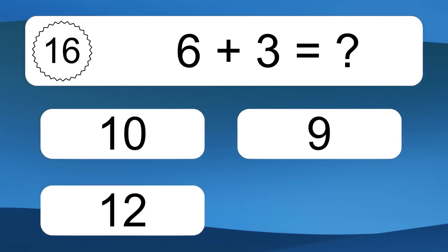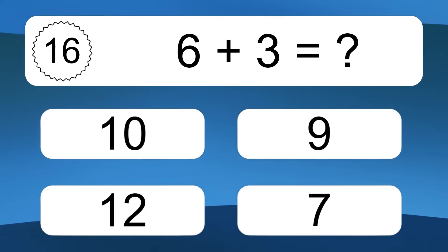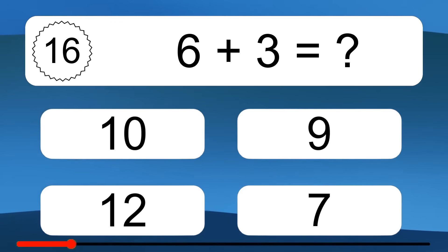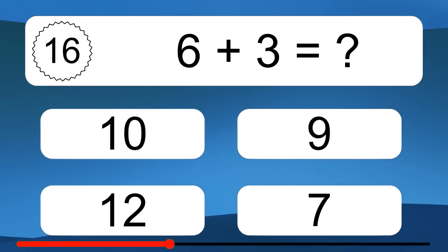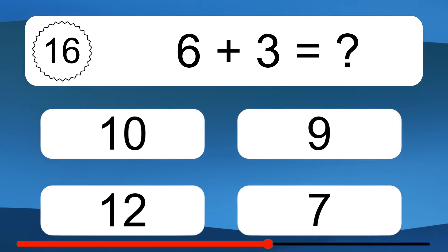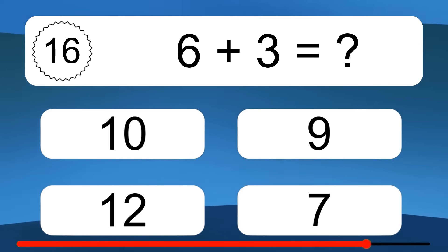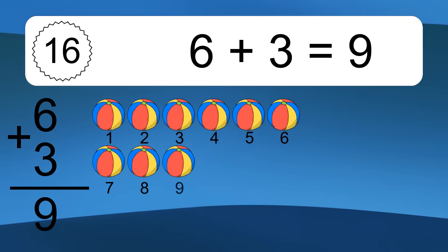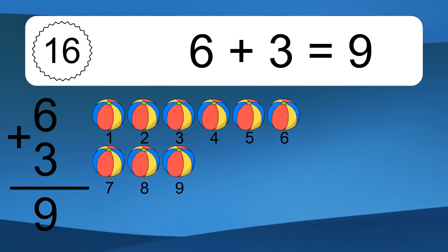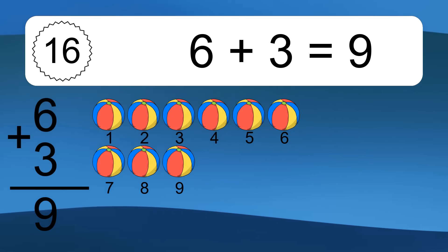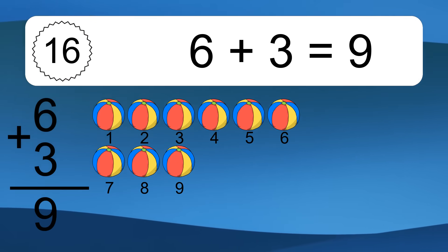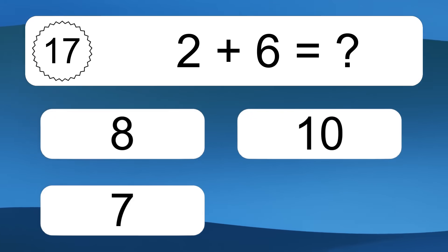6 plus 3 equals what? 6 plus 3 equals 9. Let's count it: 1, 2, 3, 4, 5, 6, 7, 8, 9.